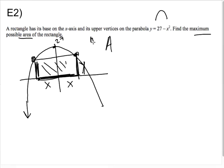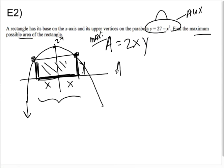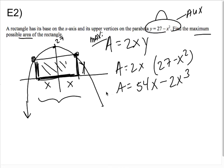So essentially the base is X and X because it's X in both directions. And the height of the rectangle would be Y. They want to find the maximum area of the rectangle. Well, the area, I want to find max area, the area of the rectangle would be 2X times Y. The trick is that Y isn't just anything. Y is on this curve. So that's my auxiliary equation. So my area is 2X times (27 - X²). I would suggest that you distribute, you're going to get 54X - 2X³.